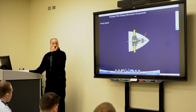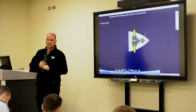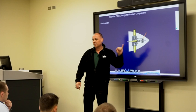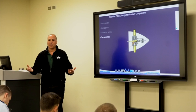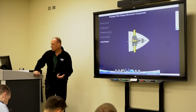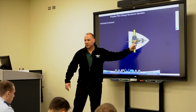The pitch change mechanism. There's a fixed cylinder that houses the feathering spring and the pitch change piston. This is the feathering spring, and that's the pitch cylinder or piston. There's the sliding piston inside that fixed cylinder, and you also have the feathering spring. The fork assembly is how the propeller is connected to the physical housing. There's the cam follower, which rotates with it — basically a mechanical balancing mechanism on the propeller.